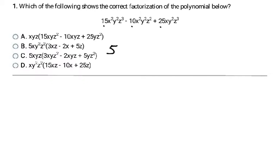Then I'm going to look at my variables, looking at each different variable or letter. I have x squared, x squared, and x. The most they have in common — two, two, and one — is one, so I'm going to write down a single x. Then I'll do the same thing with the y's: I have y squared, y squared, and y squared — they're all the same amount, so I write down y squared. Then I look at my z's: z cubed, z squared, z cubed — the most they all have in common is z squared, so I write down z squared. Then I write a parenthesis and divide that GCF out.